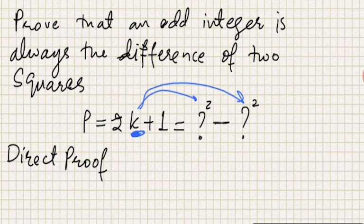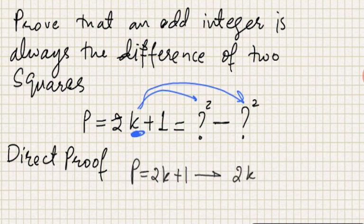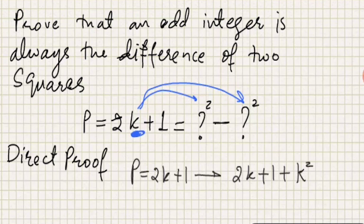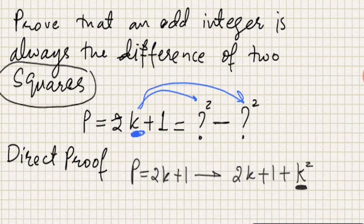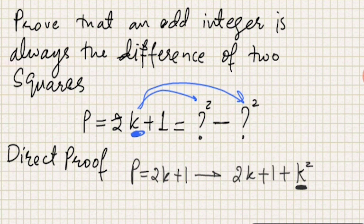I can write P = 2k + 1 into a new form in terms of K². I'm trying to introduce K² here because I need to go towards squared variables in the statement. If I've introduced a K² term, I also need to introduce a minus K² term. Now I can use the (a + b)² = a² + b² + 2ab formula.